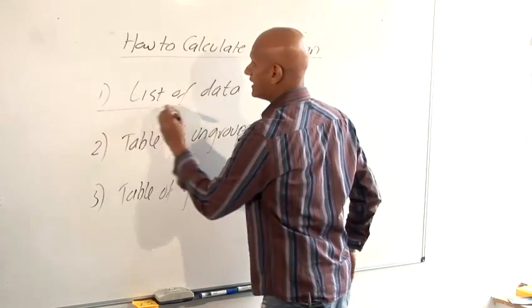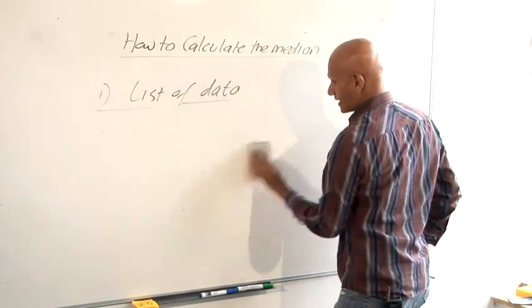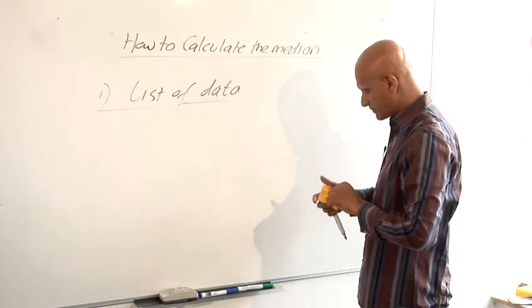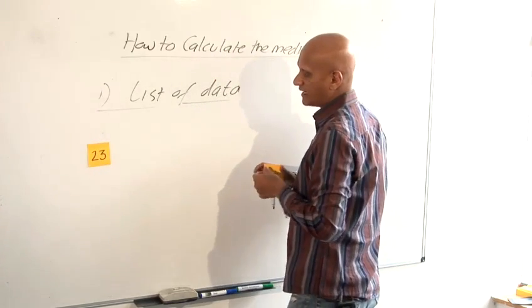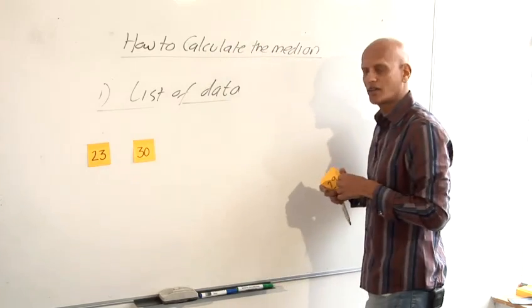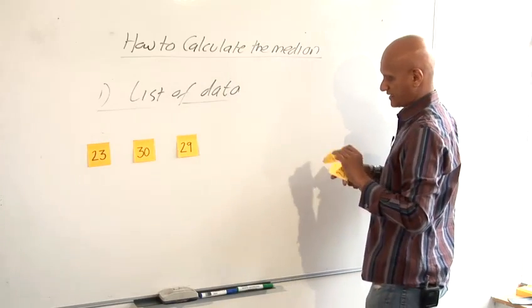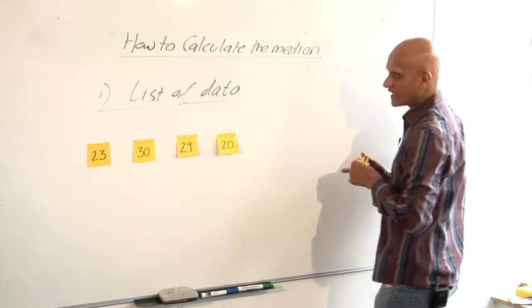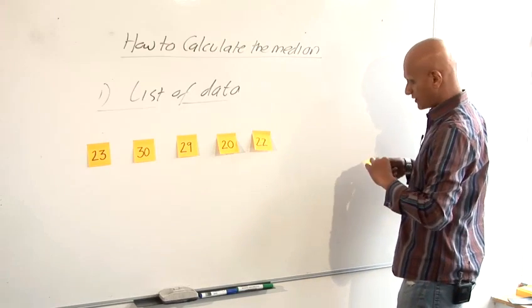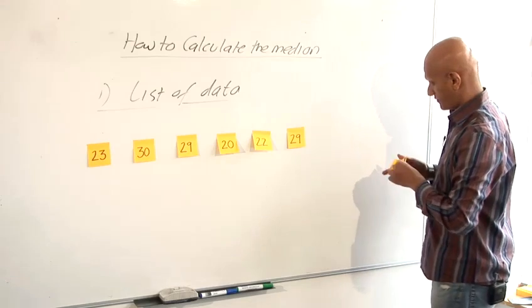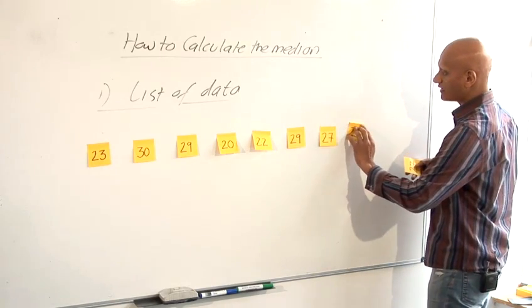So let's start off with the first case, a list of data. So if I have a list of data, I'm going to start off with a list of some data here, maybe this could be the number of cans of Coke that are drunk in a month by some students. So I've got this data here. First thing I need to do with this data is to place it in numerical order, so I need to order the data.